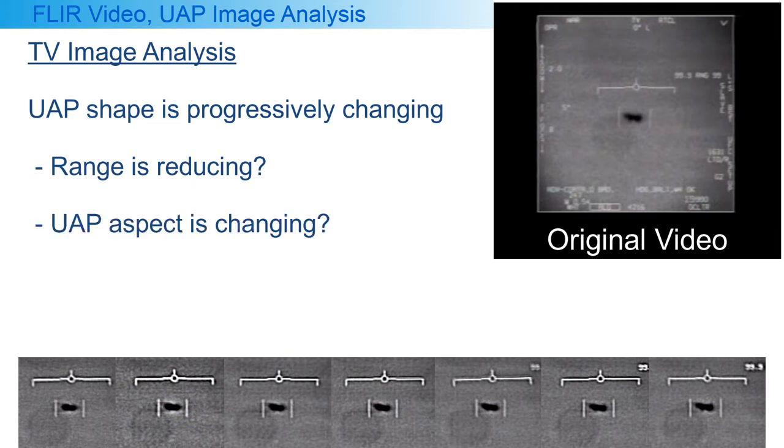Or maybe because the UAP aspect is changing slightly and becoming more side-on. It could also be a combination of both. In all the images the shape does not seem to be a completely smooth tic-tac shape.